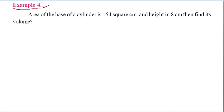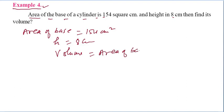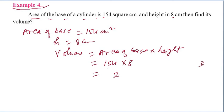Example 4: Area of the base of a cylinder is 154 cm² and height is 8 cm. Find its volume. Volume = Area of base × height = 154 × 8. Multiplying: 154 × 8 = 1232 cm³. That is your answer.